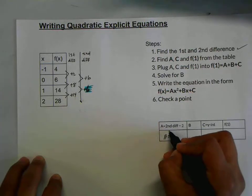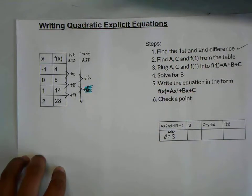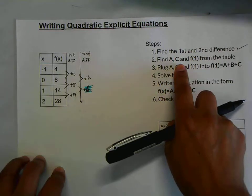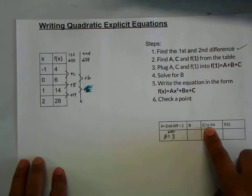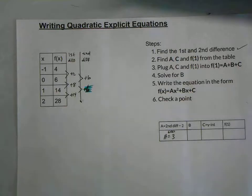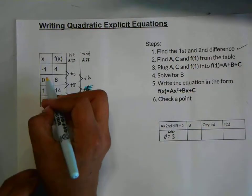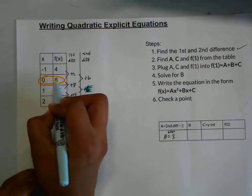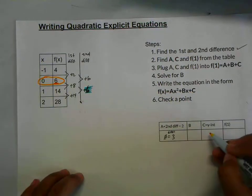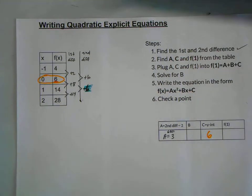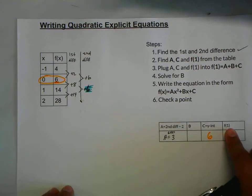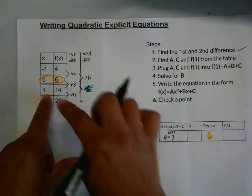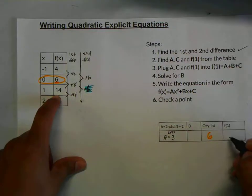It's telling us to find c as well. C is the y-intercept. Looking at the table, you can see that the y-intercept is where x is equal to 0. In our case, 6. Now, f(1). The value for when x is equal to 1, which in our case is equal to 14.